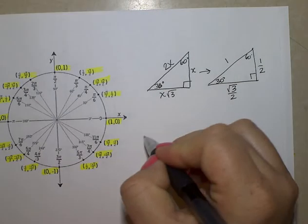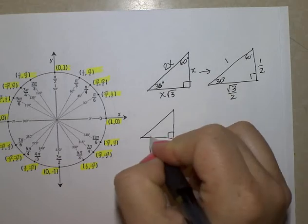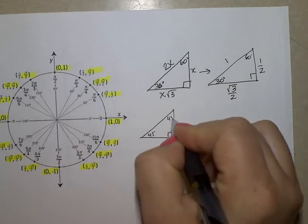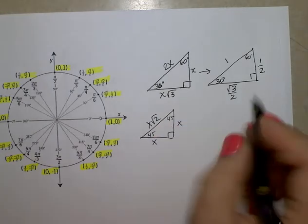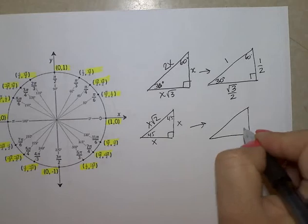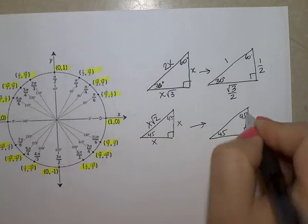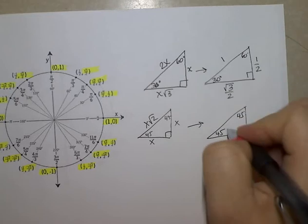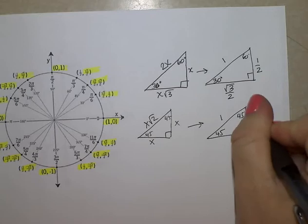The 45, 45 triangle, x, x, x radical 2. And this becomes 1, and this is after we put it into a proper form, it's radical 2 over 2, radical 2 over 2.